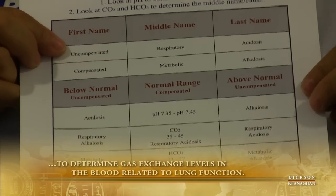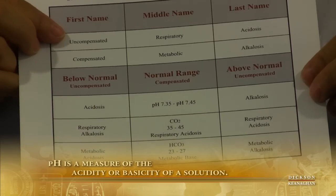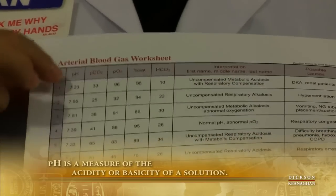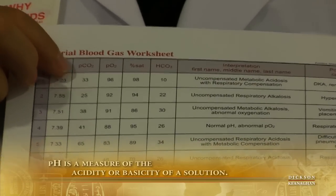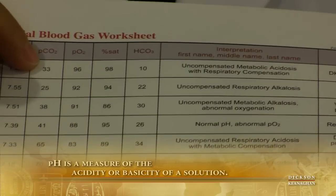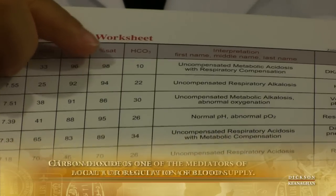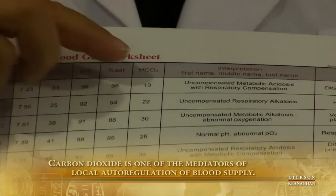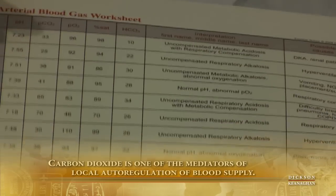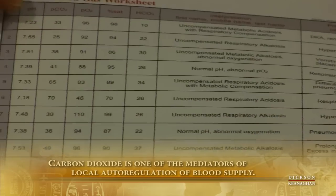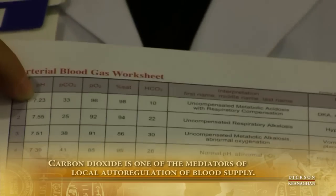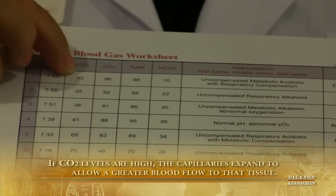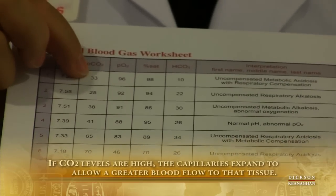To determine that, I have to look at the CO2 and the bicarb. On this example with a pH of 7.23, the CO2 is 33 and the bicarb is 10. It's a little complicated, but let's take it slow. We decided it was uncompensated acidosis. Let's pick out the PCO2 first — CO2 is 33.